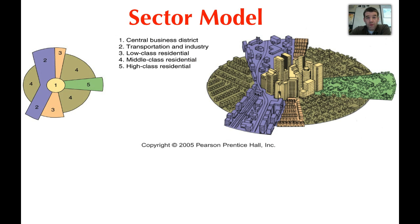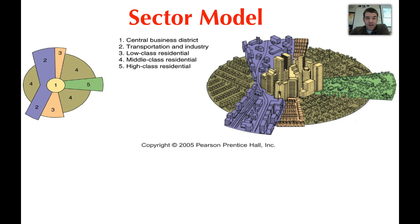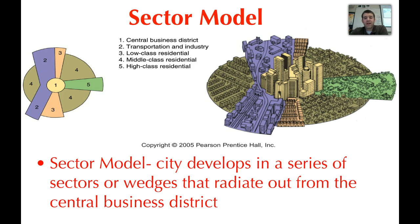The second model is the sector model. This one differs from the concentric rings in that it focuses on the built-up or natural landscape that skews or shapes development of urban areas. Even though there's still a central business district, we see wedges rather than rings moving away from the CBD — radiating regions representing different activities happening within an urban space.